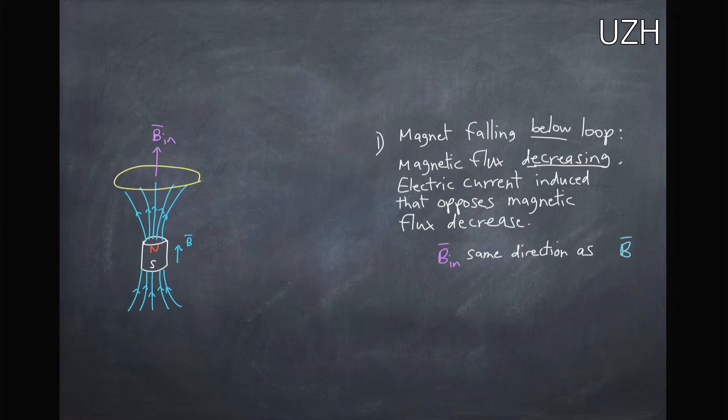So it's going to be in the opposite direction here. We would get an induced magnetic field in the same direction as B in order to oppose this decrease of magnetic flux.